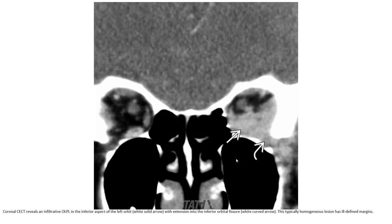This is a coronal contrast-enhanced CT revealing an infiltrative orbital lymphoproliferative lesion in the inferior aspect of the left orbit with extension into the inferior orbital fissure. This typically homogeneous lesion has an infiltrating margin.